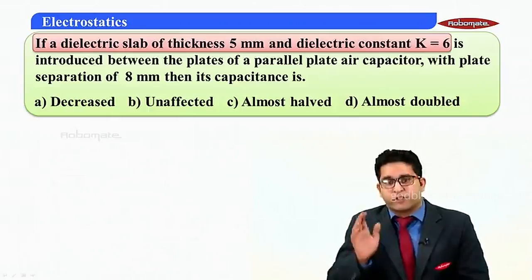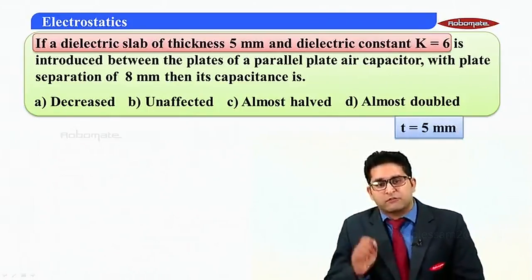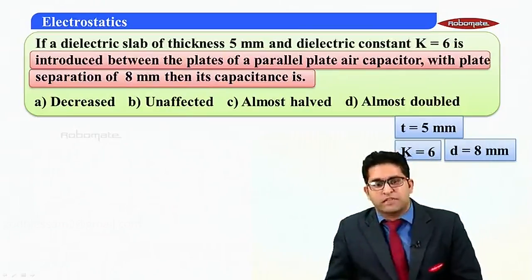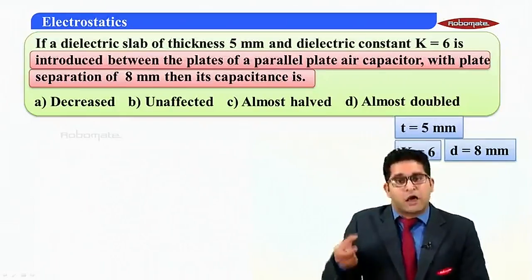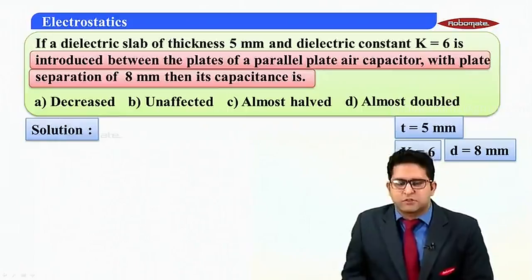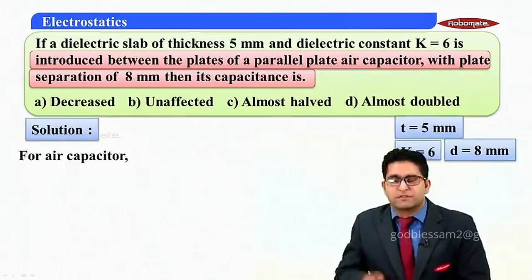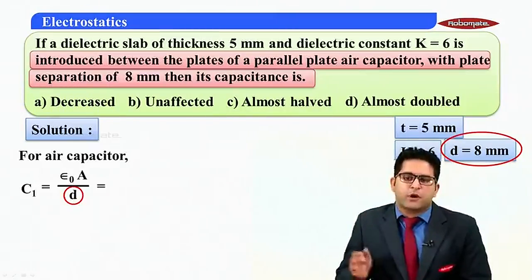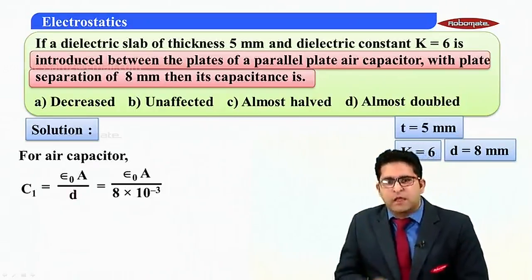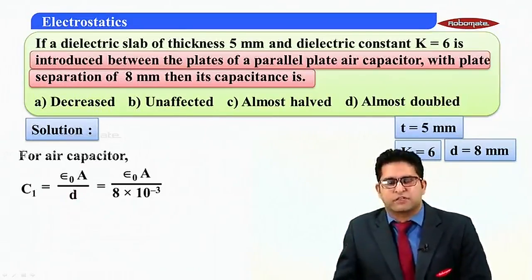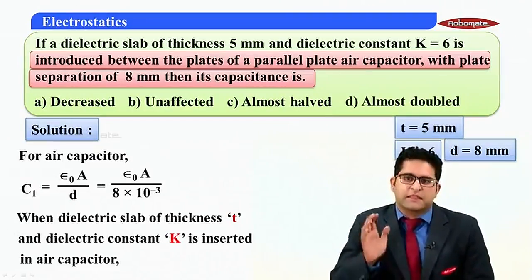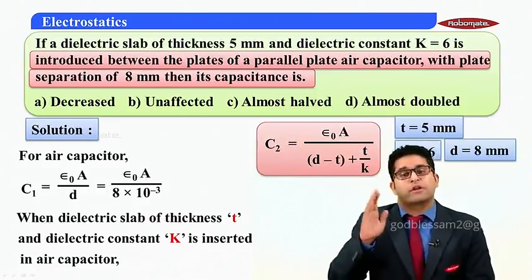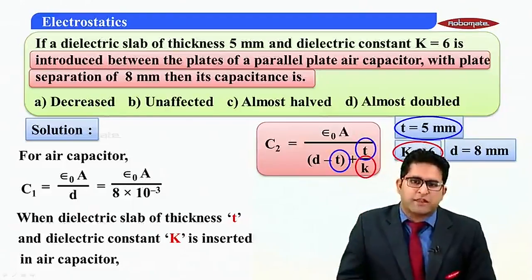Let us prove this mathematically. We are given: thickness T equals 5 mm, dielectric constant K equals 6, and plate separation d equals 8 mm. For the original air capacitor, C1 equals epsilon-naught times A upon d, which equals epsilon-naught A upon 8 times 10 to the power minus 3. When the dielectric slab is inserted, the new capacitance C2 equals epsilon-naught A upon (D minus T plus T upon K).